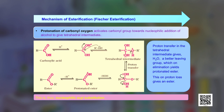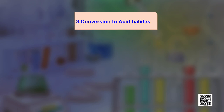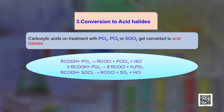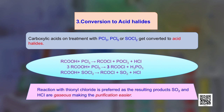The third reaction in this category is conversion to acid halides. Carboxylic acids on treatment with PCl₅, PCl₃, or thionyl chloride (SOCl₂) are converted to acid halides. In the reaction with thionyl chloride, the byproducts SO₂ and HCl are both gaseous, so the reaction with thionyl chloride is preferred because the gaseous byproducts make purification of the acid halide very easy.